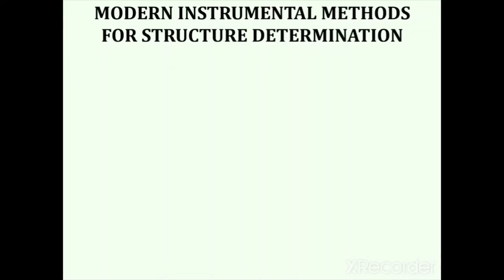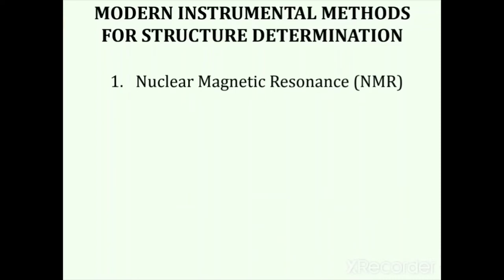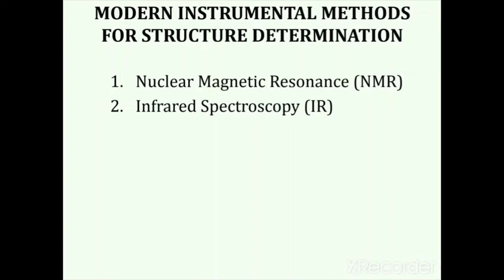Before starting ultraviolet spectroscopy, it is important to know about modern instrumental methods used for the determination of structures of various compounds. The first method is nuclear magnetic resonance spectroscopy, or NMR spectroscopy, which is useful for the determination of carbon, hydrogen, nitrogen, sulfur, and phosphorus. Infrared spectroscopy, or IR spectroscopy, is used for the determination of functional groups.